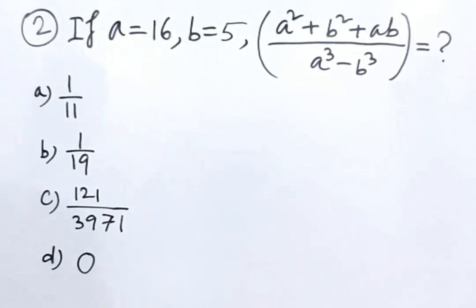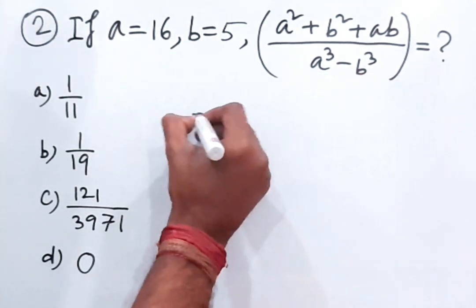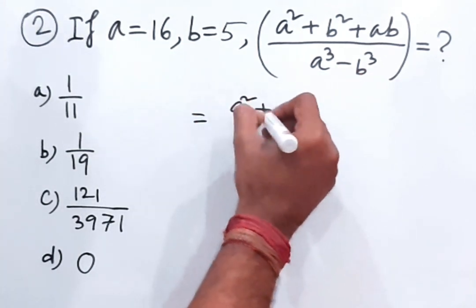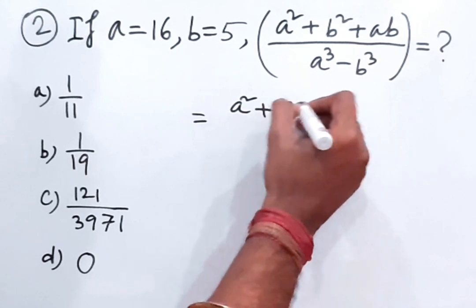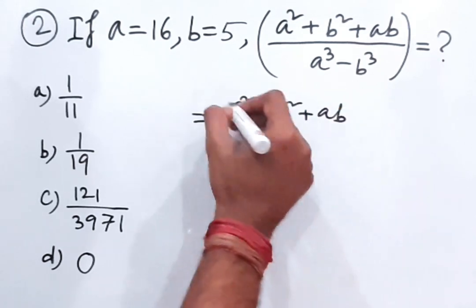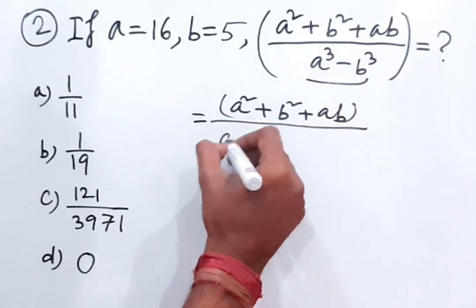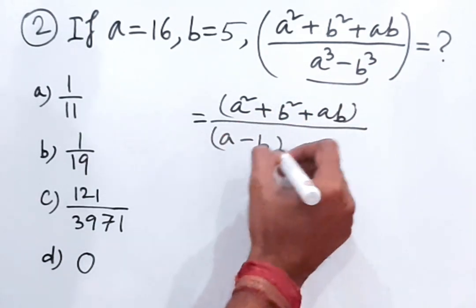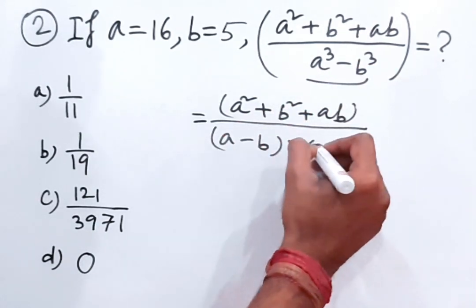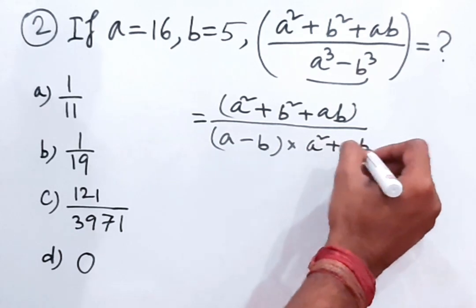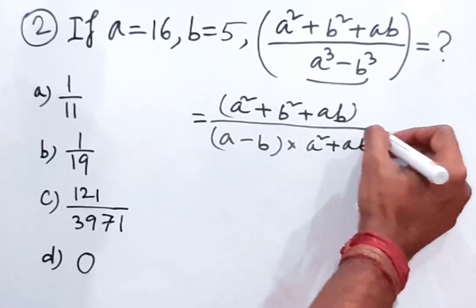The next question is: if a = 16 and b = 5, then (a² + b² + ab)/(a³ - b³) = ? From here we can write the numerator as a² + ab + b², and the denominator using the formula (a - b)(a² + ab + b²).